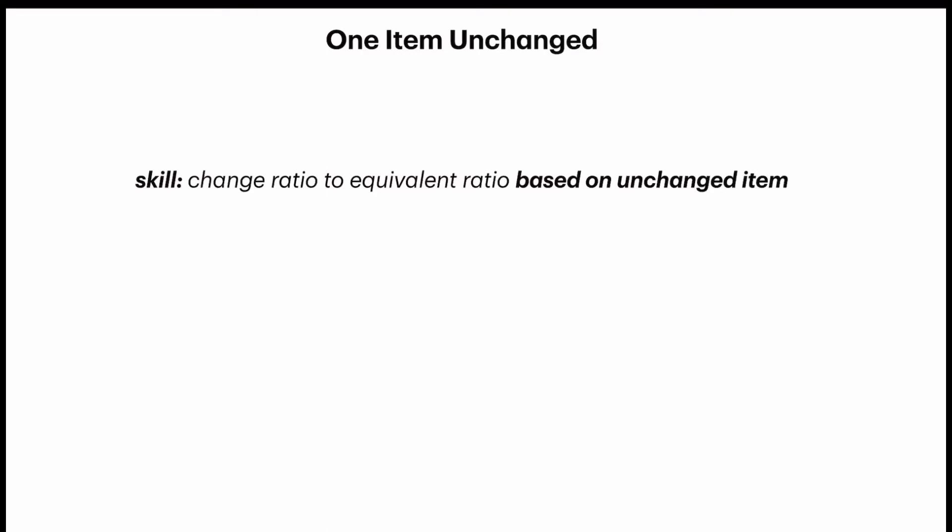In questions involving one item unchanged, you will notice two sets of ratio given. Since only one item has been changed, the other units for the other items should remain constant. So the most important skill is to change the ratio to an equivalent ratio based on the unchanged item.